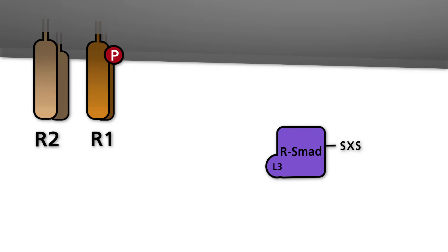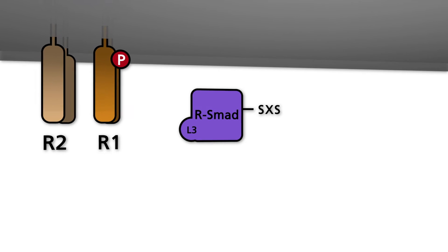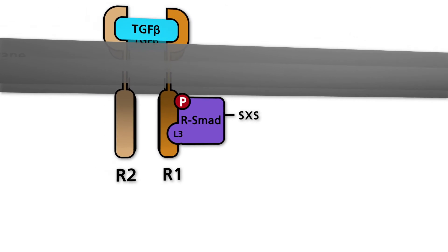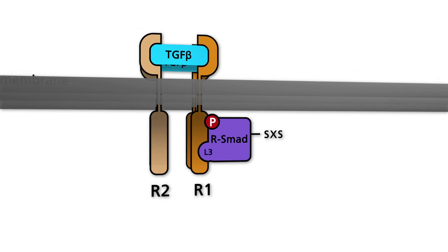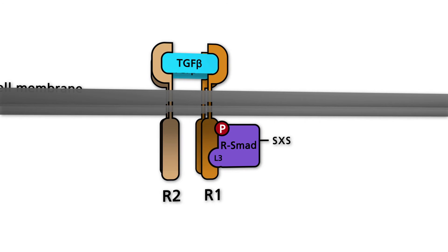Following receptor activation, R-SMADs are recruited to the receptor complex, primarily via an interaction of the L3 loop of the R-SMAD with the cytoplasmic receptor domain. After R-SMAD binds to the receptor complex, two serine residues in the SXS motif of the R-SMAD are phosphorylated.